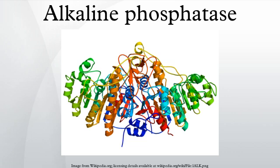Leukocyte alkaline phosphatase is found within white blood cells. White blood cell levels of LAP can help in the diagnosis of certain conditions. Higher levels are seen in polycythemia vera, essential thrombocytosis, primary myelofibrosis, and the leukemoid reaction. Lower levels are found in chronic myelogenous leukemia, paroxysmal nocturnal hemoglobinuria, and acute myelogenous leukemia.